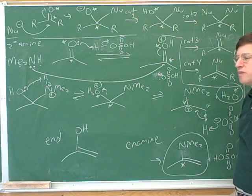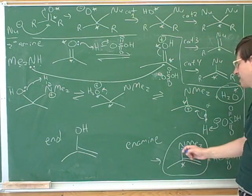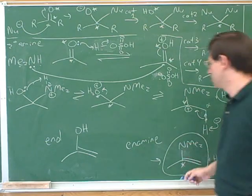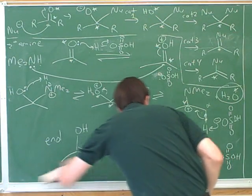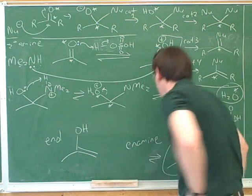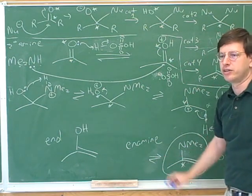This reaction was again reversible because the way to reverse this is just to kick the nitrogen off. And nitrogens can be leaving groups, so maybe it would have been best to use equilibrium arrows all along the way.